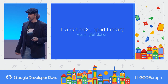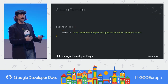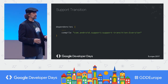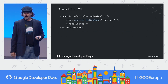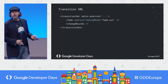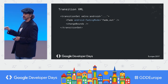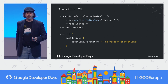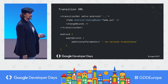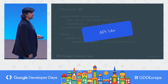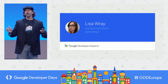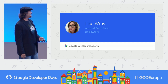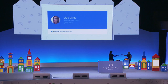The final thing I'll talk about is the transition support library. We added additional transition types in Lollipop and above — things like path motion and propagation — all available in the transition library. When you use transition XML with the support library, you specify --no-version-transitions as an AAPT option. After that, you can use all the same transition XMLs that you use for the platform transition API on API 14 and above.